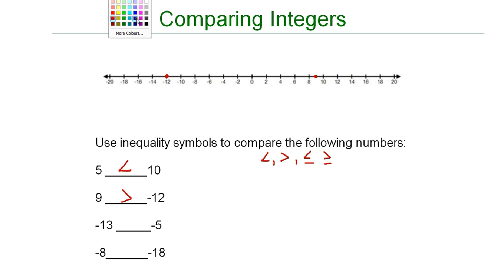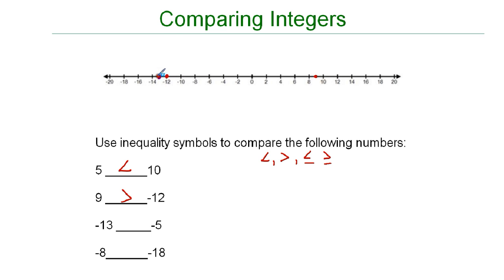Our next one becomes a little harder because we're comparing two negative numbers. Here we have negative 13 and negative 5. If I plot them on my number line, I have negative 13 here and negative 5 here. The one thing that you can do is look to see which one is farther away from 0.